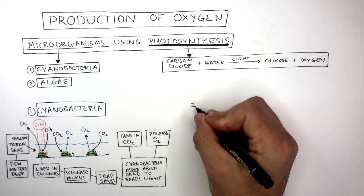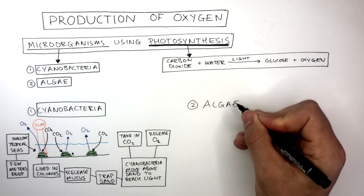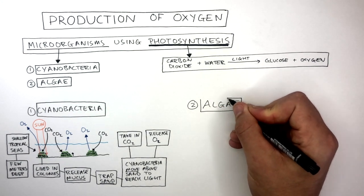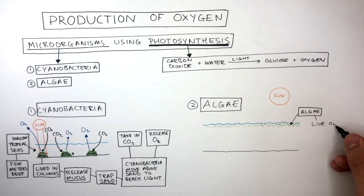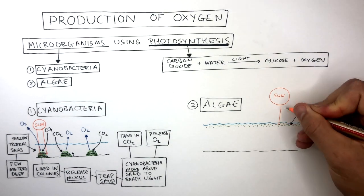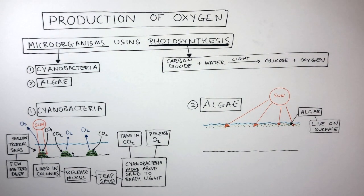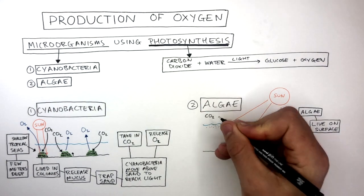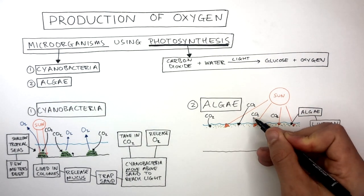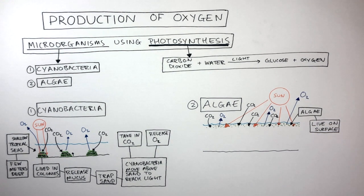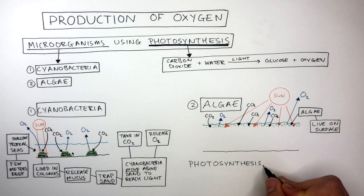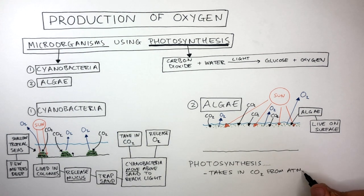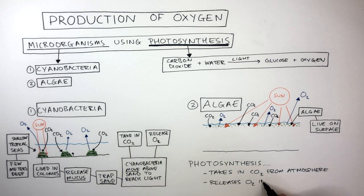Photosynthesis was also carried out by a second microorganism called algae, which appeared roughly 2 billion years ago. These green dots represent the single-celled algae, which lived on the surface of the water — where the sunlight is the strongest, giving the highest rate of photosynthesis. The carbon dioxide is taken in by the algae and then the algae release oxygen back into the atmosphere. Photosynthesis is the chemical reaction which both cyanobacteria and algae use, where they take in carbon dioxide from the atmosphere and release oxygen back into the atmosphere.